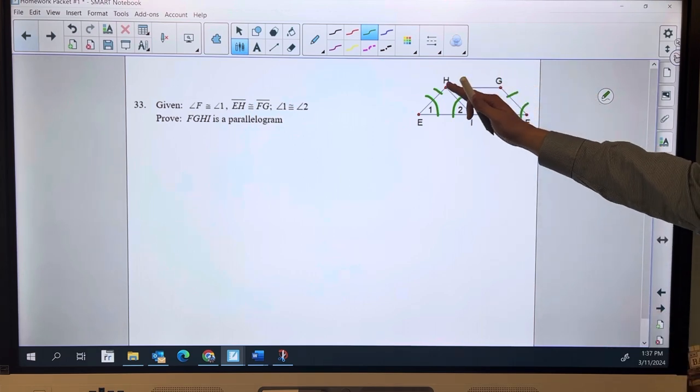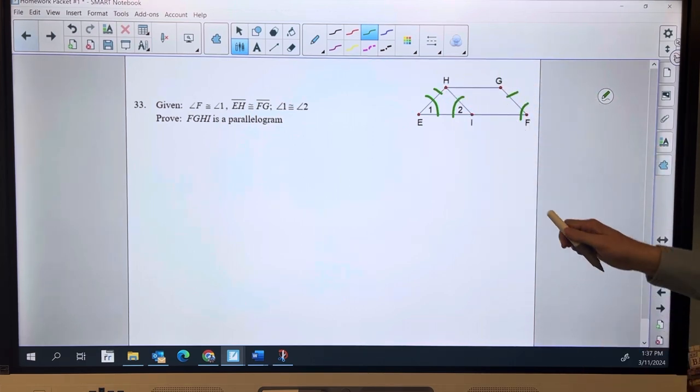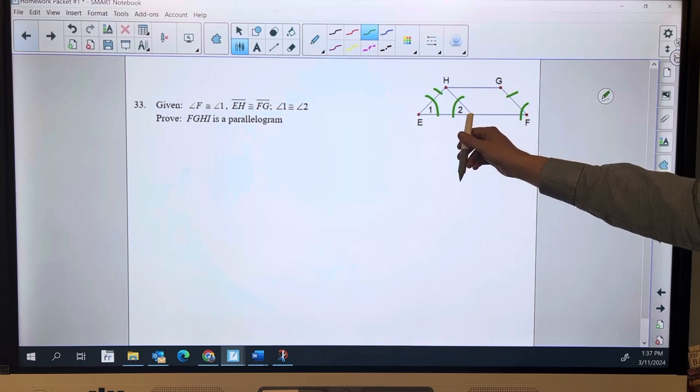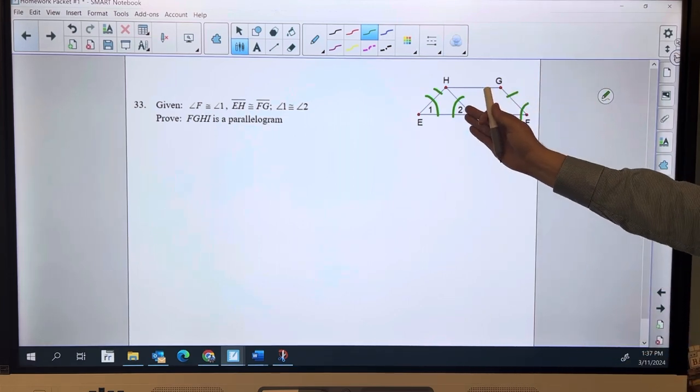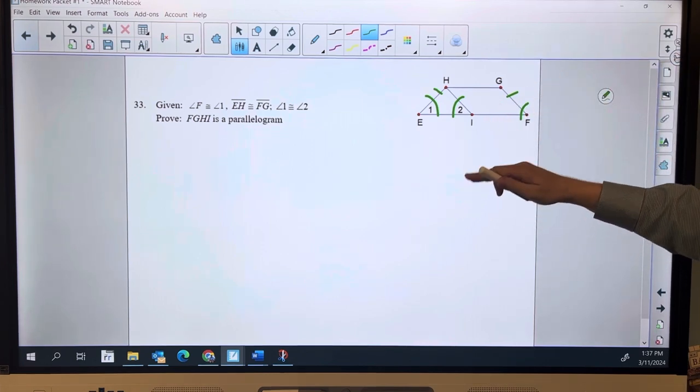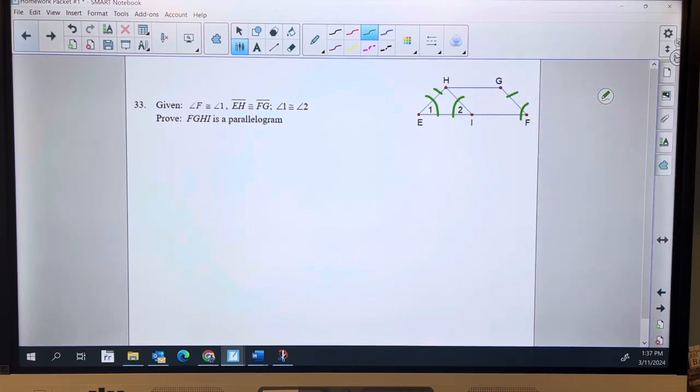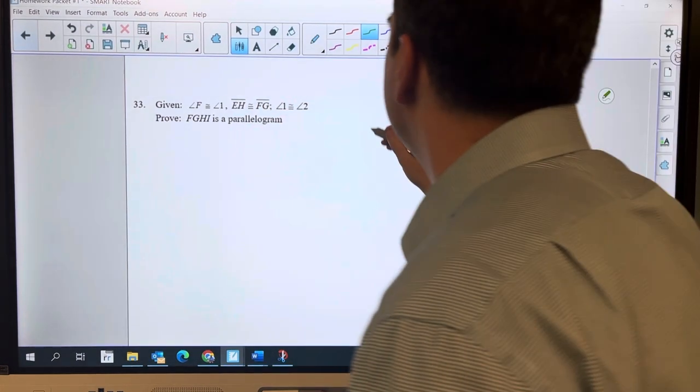We also need those opposite sides to be parallel, which that angle F and the angle 2 give me parallel because we've got corresponding angles are congruent, which makes HI parallel to GF. So we need parallel and we need congruent. Let's do it.